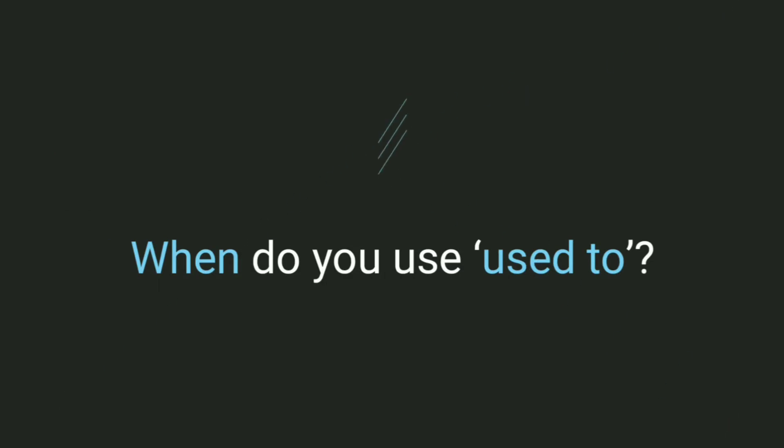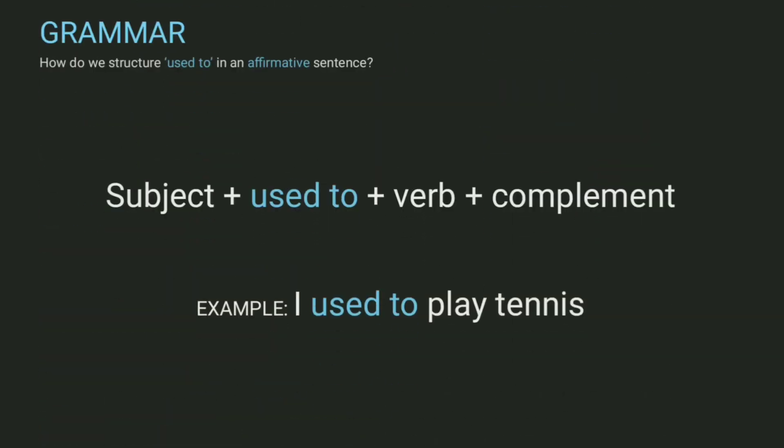Let's start. When do you use used to? We use used to to describe something we did in the past but don't do now. In an affirmative sentence, put subject plus used to plus verb plus complement. For example, I used to play tennis.